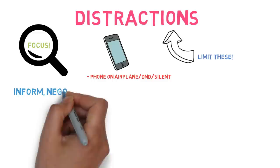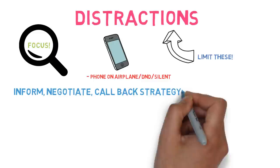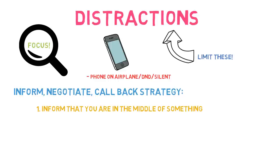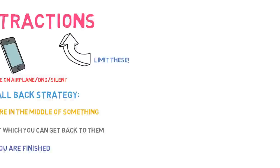If someone else comes knocking for help, use the inform-negotiate-callback strategy, which was suggested by Francesco Cirillo himself. Inform the distracting party that you're in the middle of something, negotiate a time when you can get back to them, and call back when your Pomodoro is complete and you're ready to address their need.